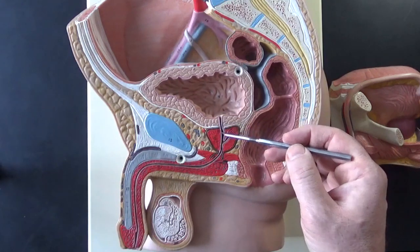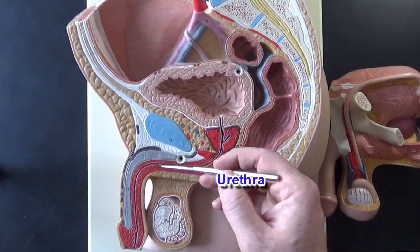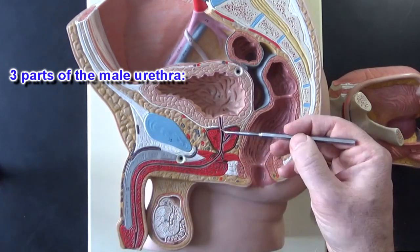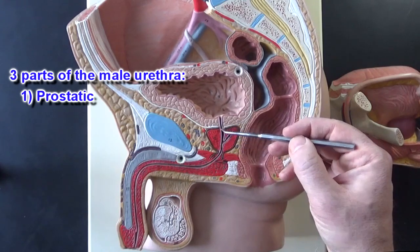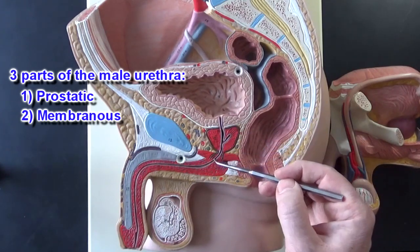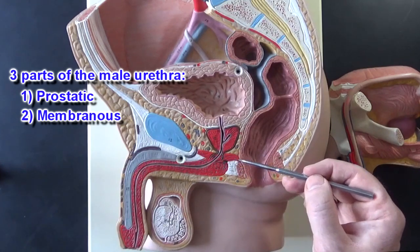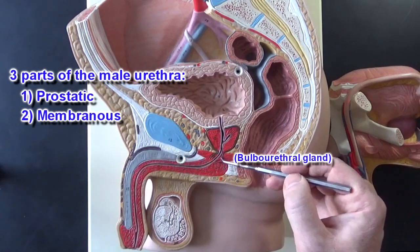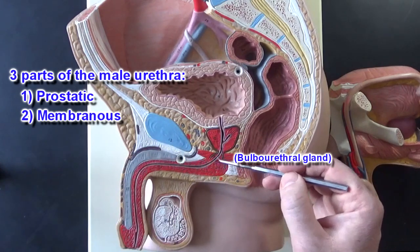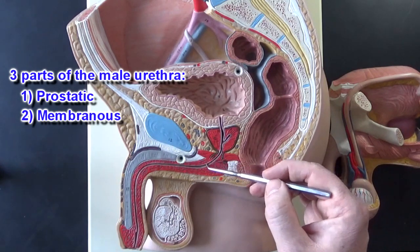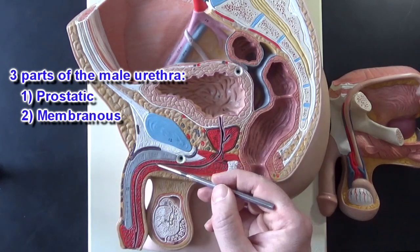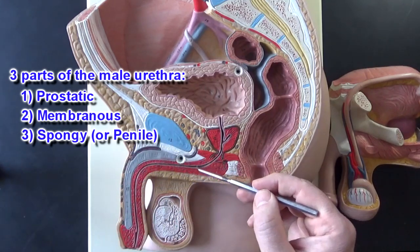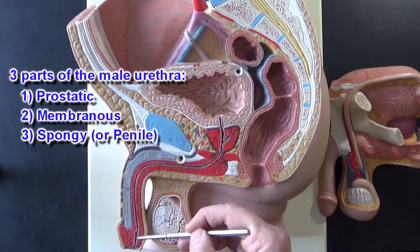Here is the urethra. The male urethra is made up of three parts: the prostatic urethra right here, the membranous urethra right here as it passes through the pelvic floor muscles, where the bulbourethral gland is also located, and the third portion — the penile urethra, also known as the spongy urethra because it's located in the corpus spongiosum.